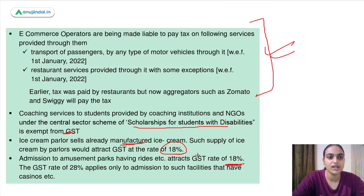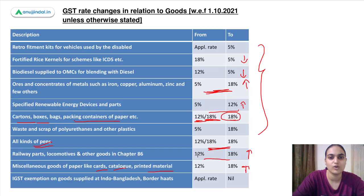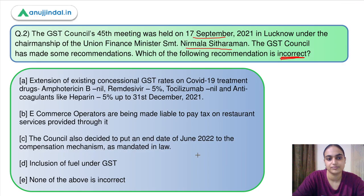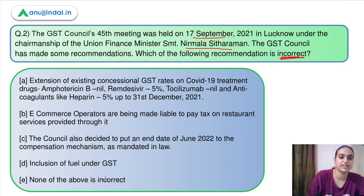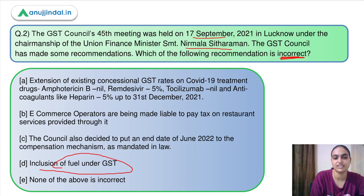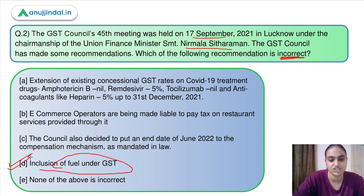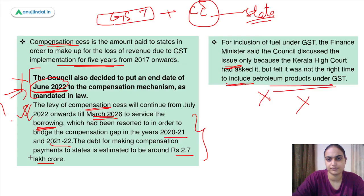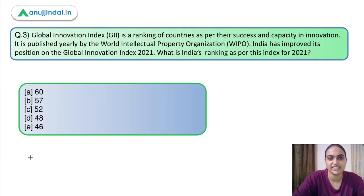Coming back to question 2: the incorrect recommendation is the one which says fuel has been included under GST — petroleum products have not been included under GST.